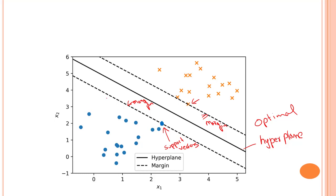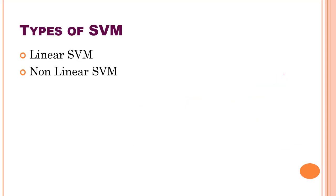Whenever a new data point comes — let's say this one — you will say that it belongs to the blue class. Similarly, if you have a point on the other side, you will say that it belongs to the orange class. That's everything about linear SVM. Now let's talk about the types of SVM.